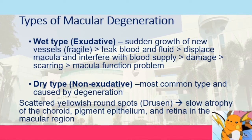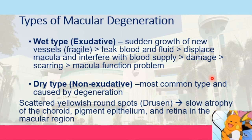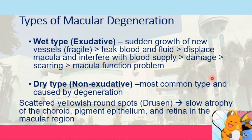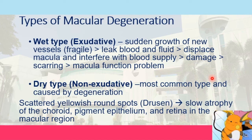There are two types of macular degeneration: wet and dry. The wet type, or exudative, is characterized by sudden growth of new, fragile vessels that leak blood and fluid, displacing the macula and interfering with blood supply, leading to damage and scarring. The dry type, or non-exudative, is the most common type and is caused by degeneration rather than neovascularization. Scattered yellowish round spots called drusen appear in the macular region, followed by slow atrophy of the choroid, pigment epithelium, and retina in the macular region.